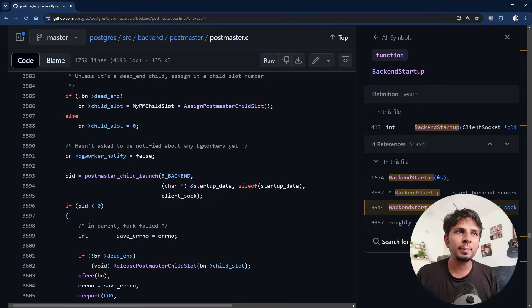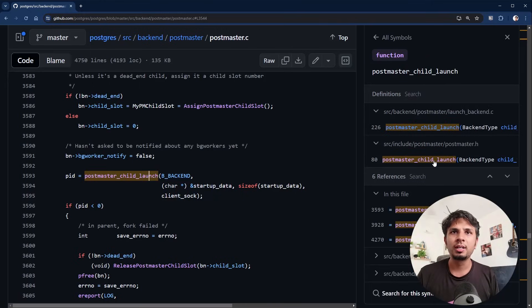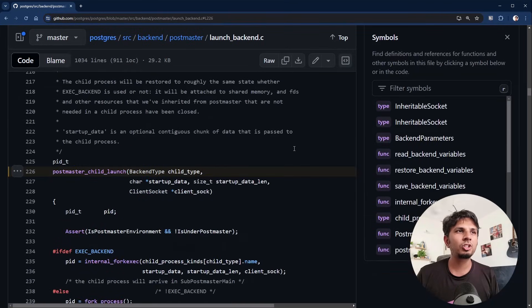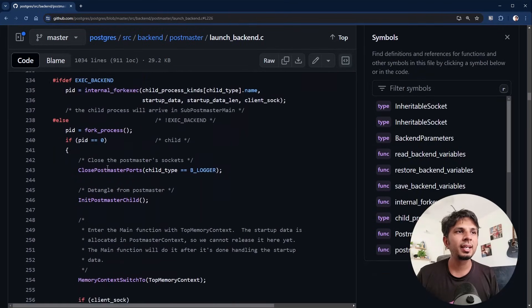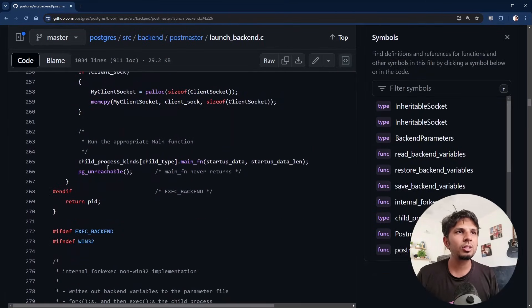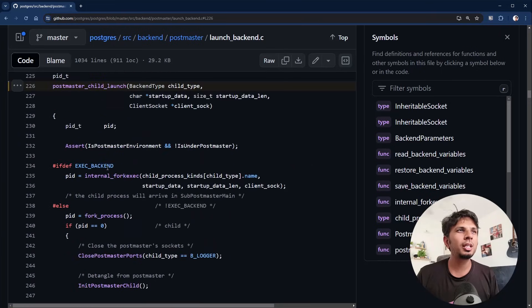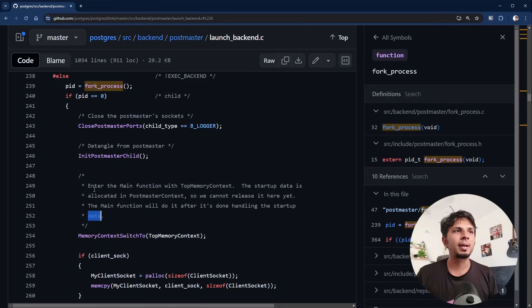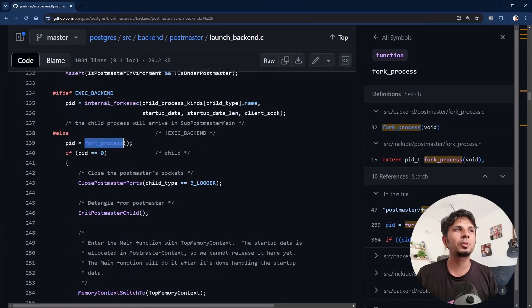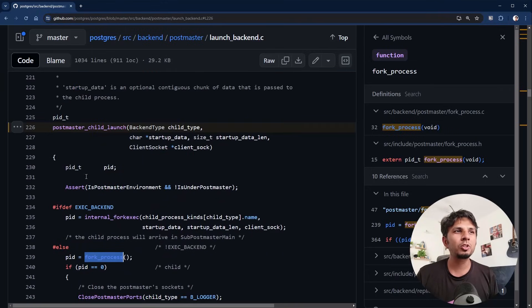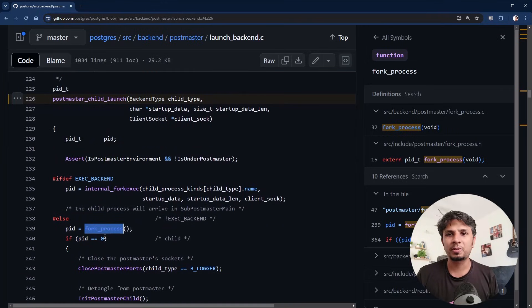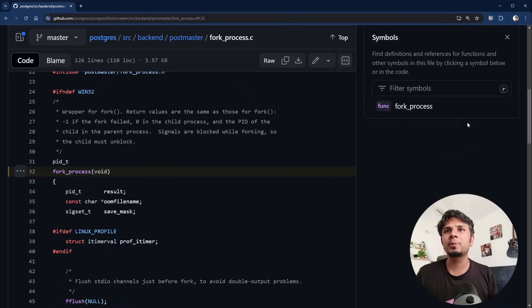In the postmaster_child_launch code, let's see what's written. We see that, scrolling just below, we would see fork_process happening. So this is where postmaster_child, some assertion happened, and fork_process happened. What is this fork_process? Fork_process is about forking the process. It is an abstracted method which is written in file fork_process.c under postmaster.